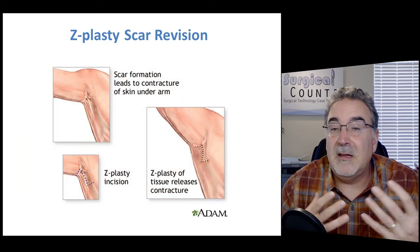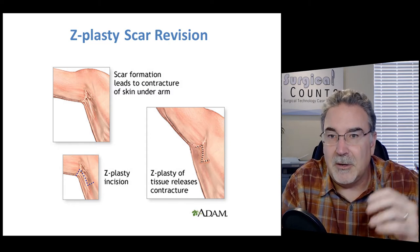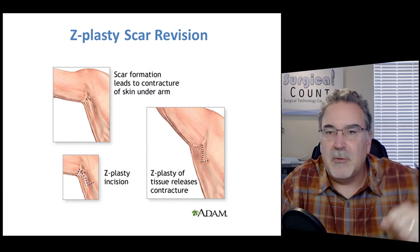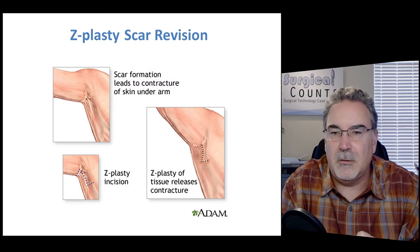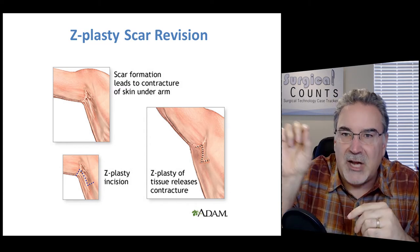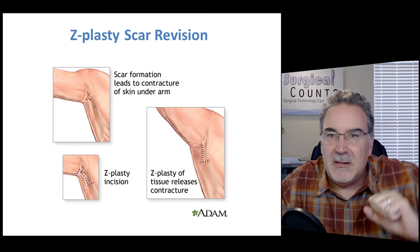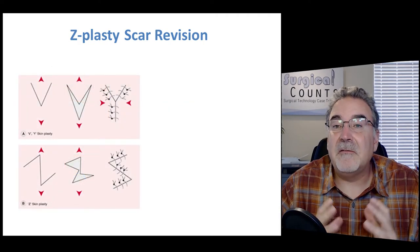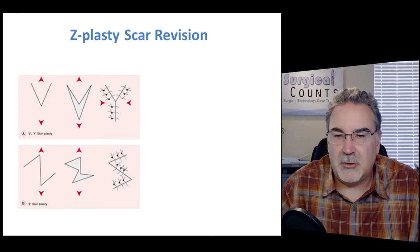You'll see Z-plasty in many different types of joints, not just the finger. Here it's shown in the axillary or underarm area, where a vertical scar was causing difficulty for a patient to lift their arm. Z-plasty changes the direction of that scar so it's not pulling in the direction the arm wants to move.